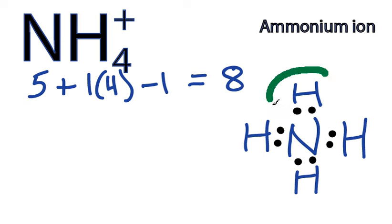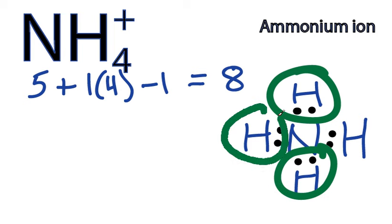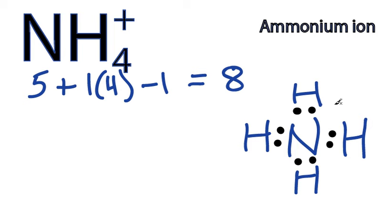And if we check our octets, hydrogen only needs 2. So the hydrogens, they're okay, they all have 2 valence electrons. Nitrogen needs 8 valence electrons for a full outer shell, or an octet. And nitrogen has 8, so we're good.